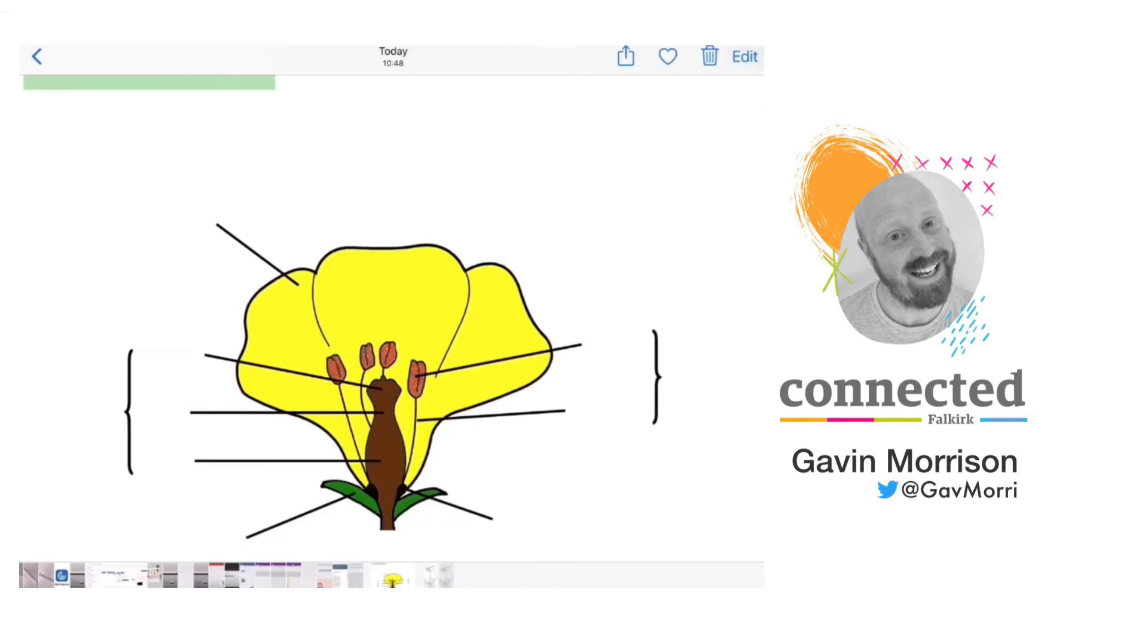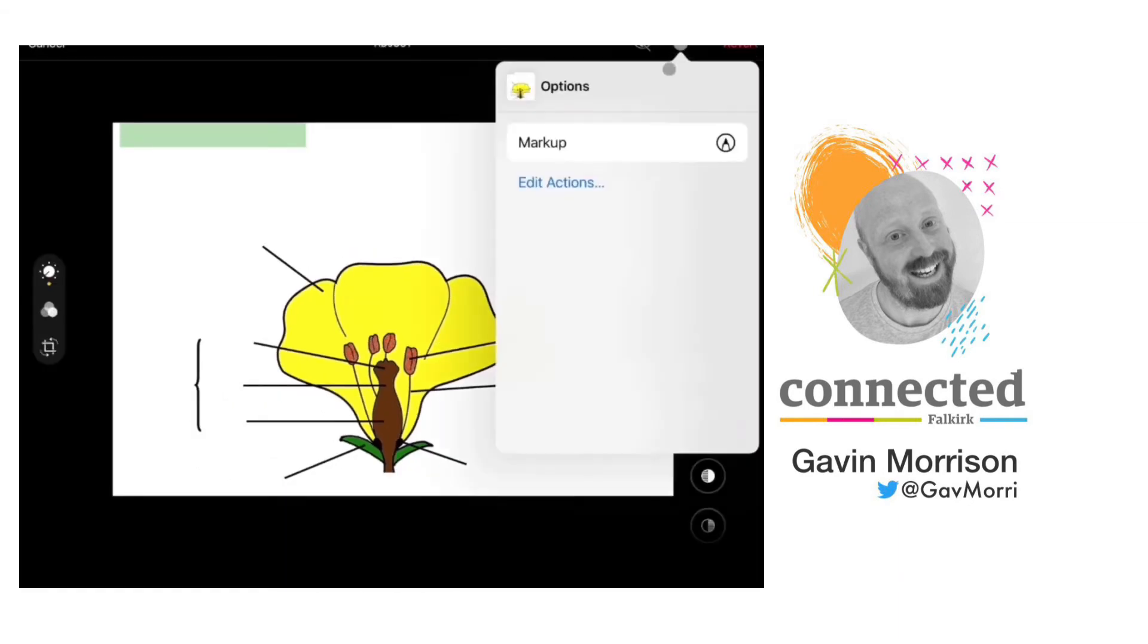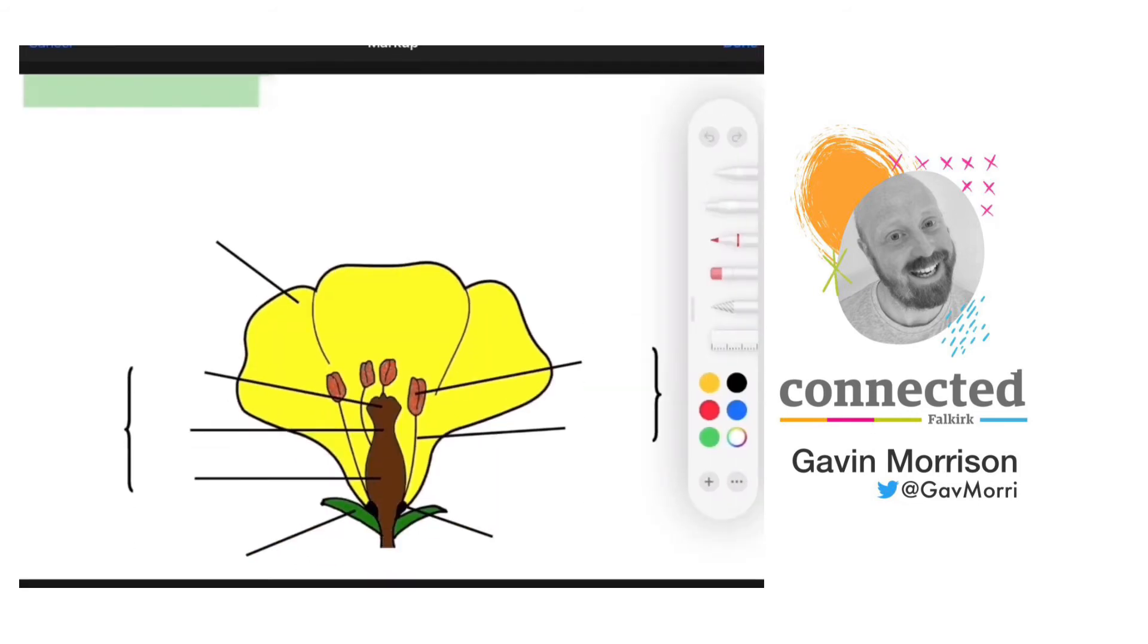For this photo I am again going to tap on edit and the ellipsis and select markup. The first thing I want to do is select the white pen to wipe away this green box at the top of the image. Now I am going to press on the plus icon on the drawing toolbar and text, and that will allow me to add a text box.